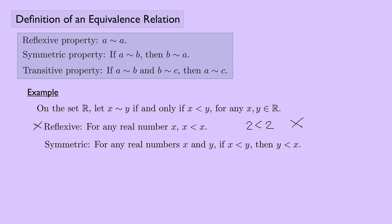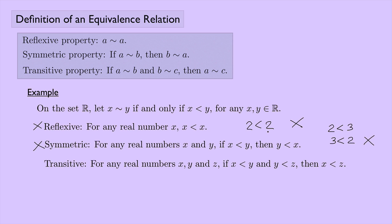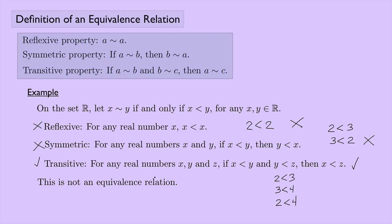For symmetric: for any real numbers X and Y, if X is less than Y, then Y is less than X. Two is less than three — does that mean three is less than two? No, that doesn't work either. For transitive: for any real numbers X, Y, and Z, if X is less than Y — say two is less than three — and Y is less than Z — say three is less than four — then does two is less than four follow? Yes, less-than does satisfy transitivity. But since reflexive and symmetric failed, this is not an equivalence relation.